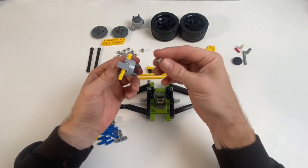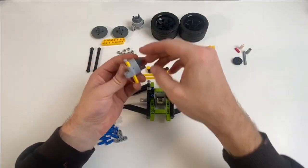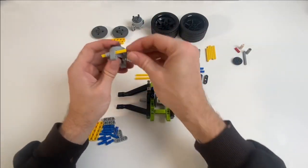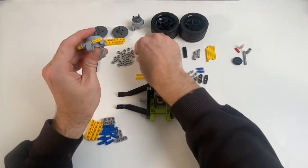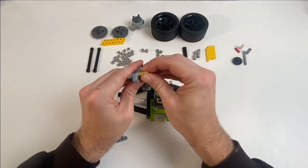Also here, you could use one of the larger bushes instead of two smaller ones. It makes absolutely no difference to the overall build. I just have more of the smaller ones in my kit, so I'm going to use those.